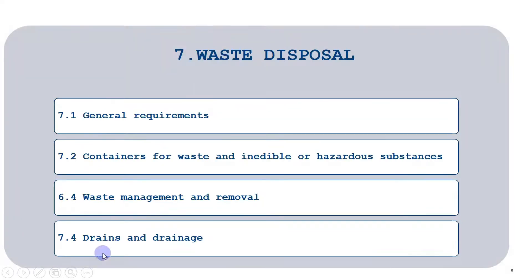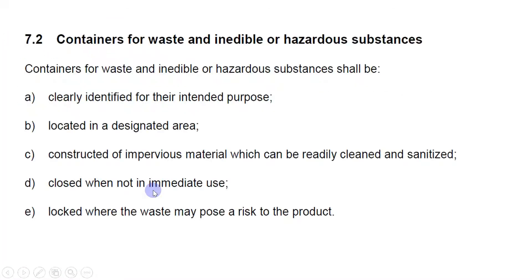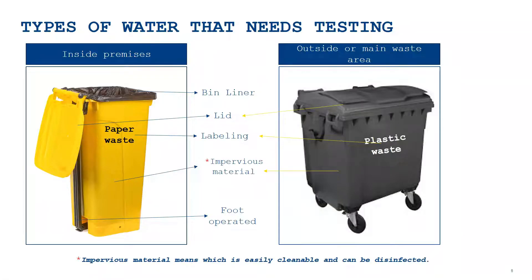The general requirement is a summary of all three other requirements - if you comply with those three requirements, you will automatically comply with the general requirement. So I will directly jump to clause 7.2, which is containers for waste and inedible or hazardous substances. I have made some points for you to understand it easily.